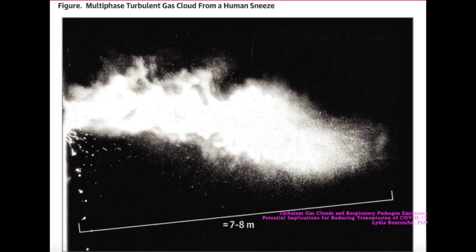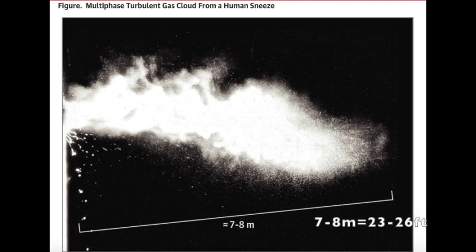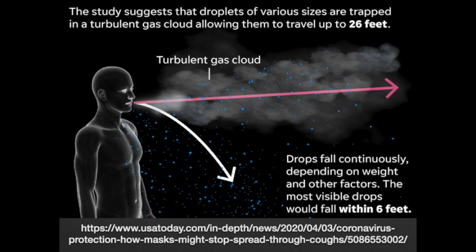So how far do you have to stand away from someone who has the virus when they sneeze? There was a study suggesting that droplets of various sizes are trapped in a turbulent gas cloud when someone coughs or sneezes, allowing them to travel up to 26 feet. The drops will fall continuously depending on their weight. The most visible drops will fall within six feet of the person.